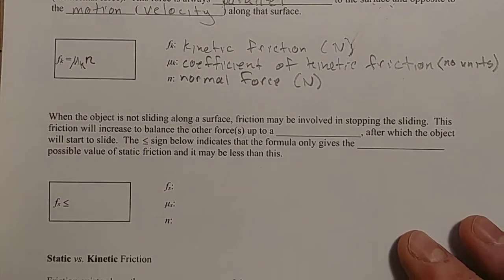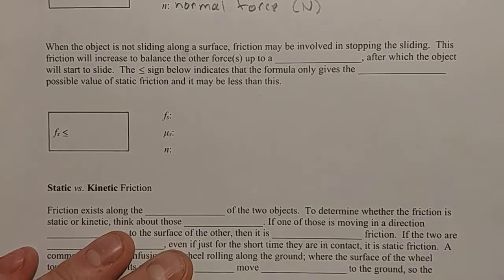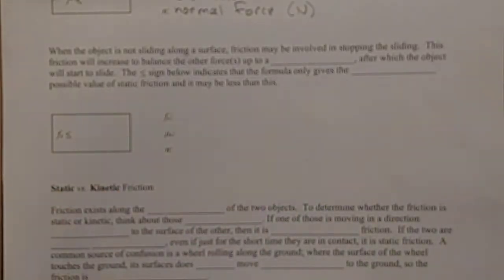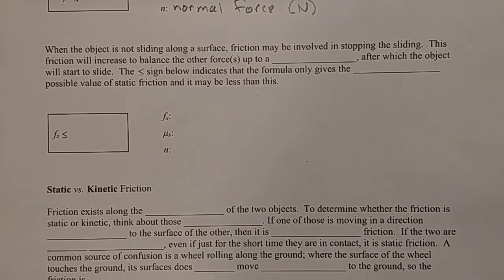Now, even when an object is not sliding, there is still friction. And we're quite familiar with that. If you try to slide a heavy box across the floor, then you might not be able to move it at all. And the reason why you can't move it at all is because of friction. So there's still friction here, but there's no sliding going on. So when the object is not sliding, friction may be involved in stopping the sliding.